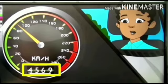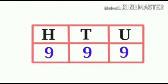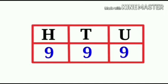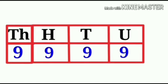Let's see. We have learned numbers till 999. Nine is under the units place, nine is under the tens place, and nine is under the hundreds place. So today we will learn four digit numbers. Let's see how to write four digit numbers.